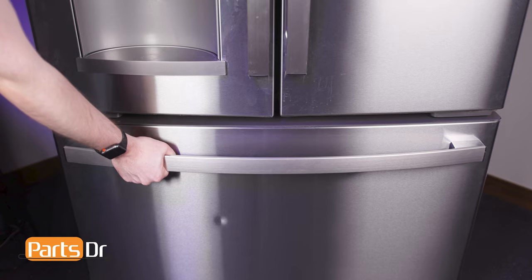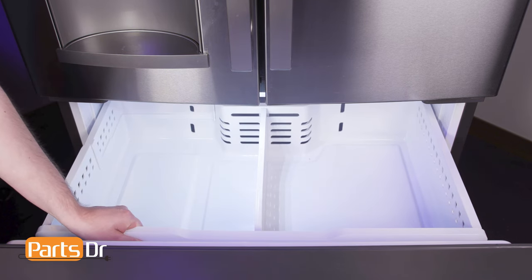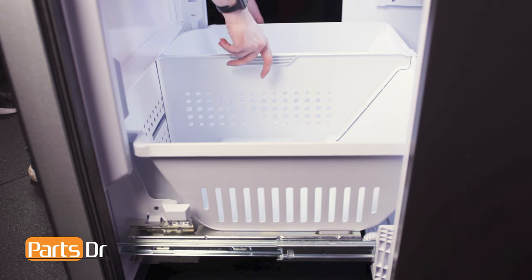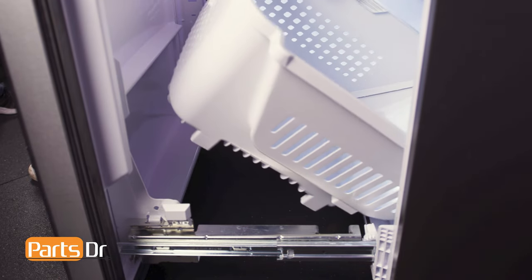Start by opening the freezer door, then pull the upper drawer forward and tilt it up and out. Remove the lower drawer by pushing it back slightly, then tilt the front up and out.